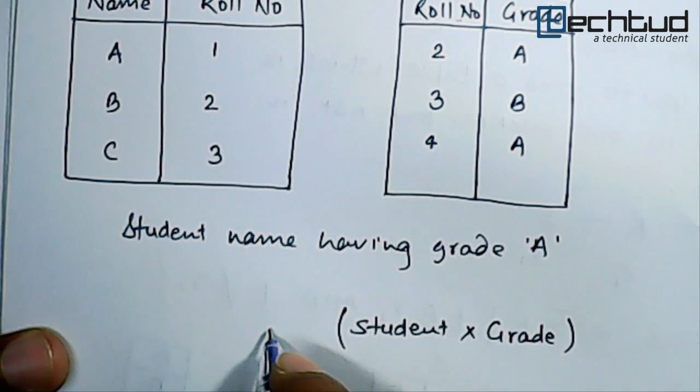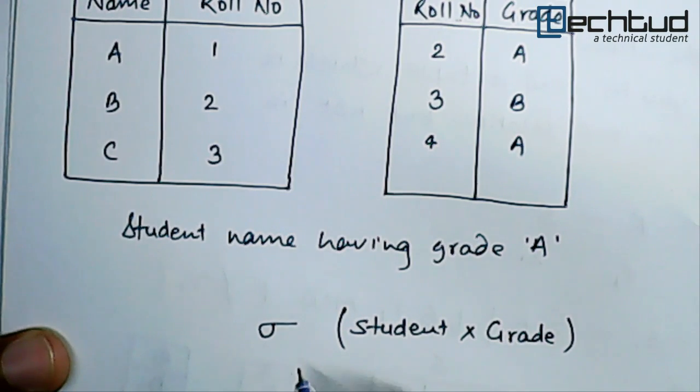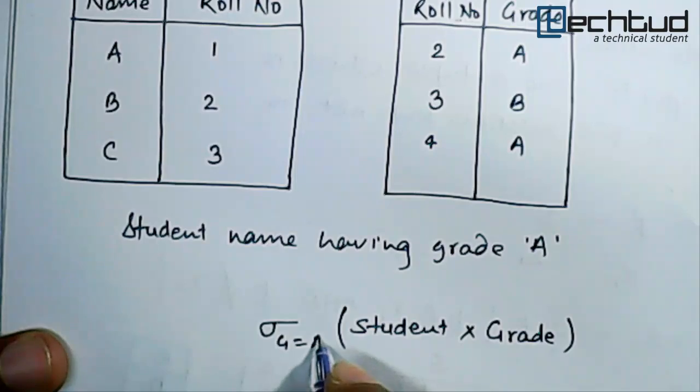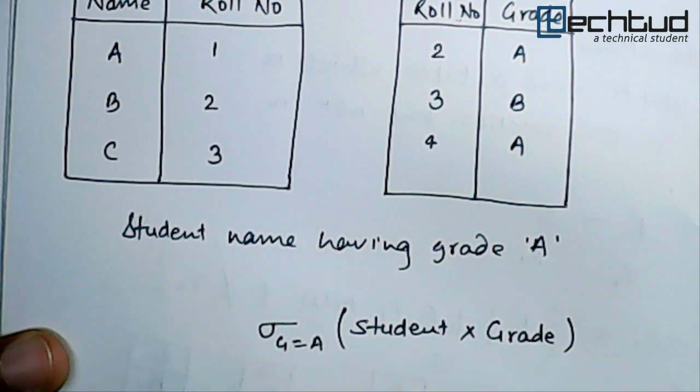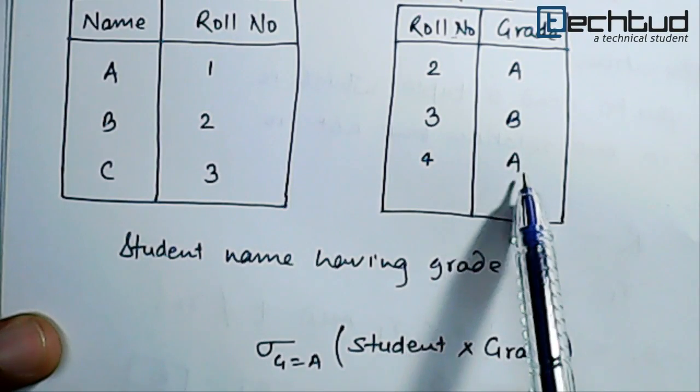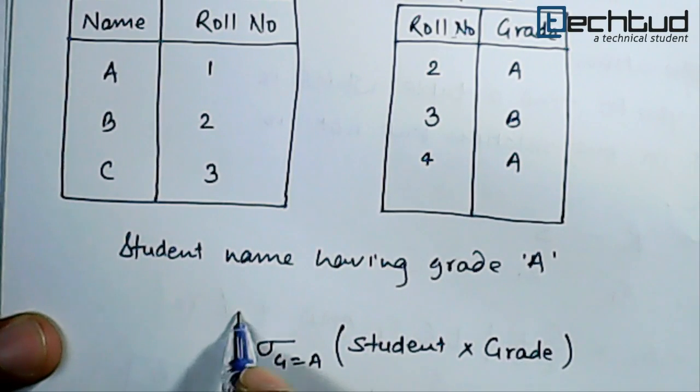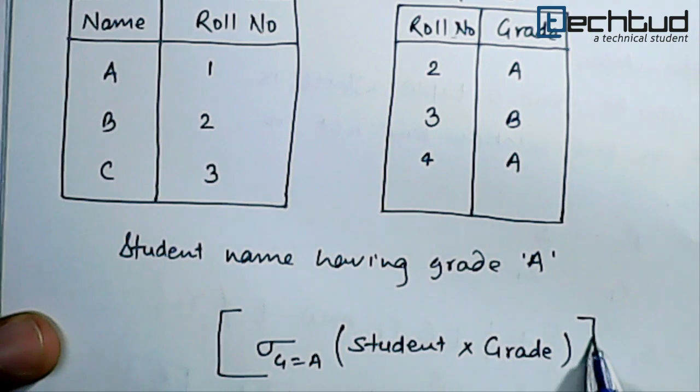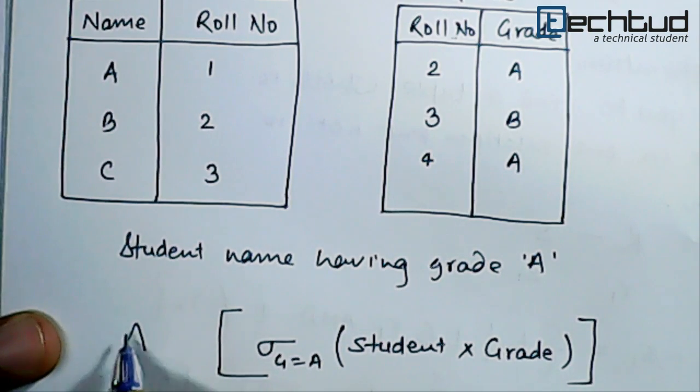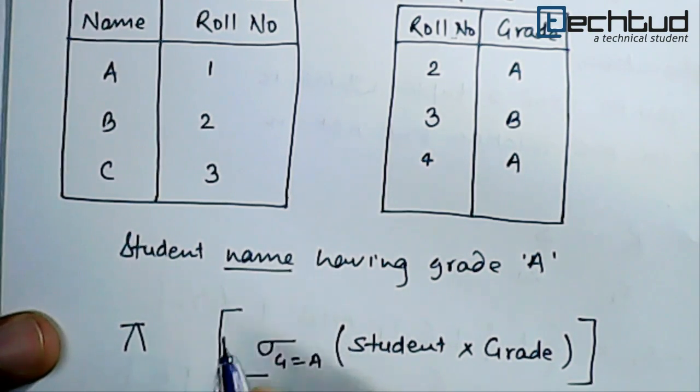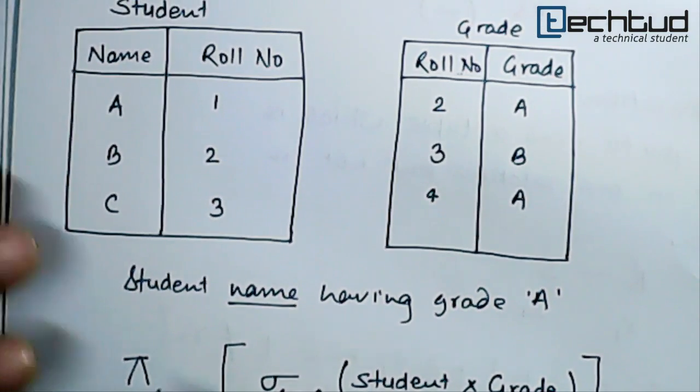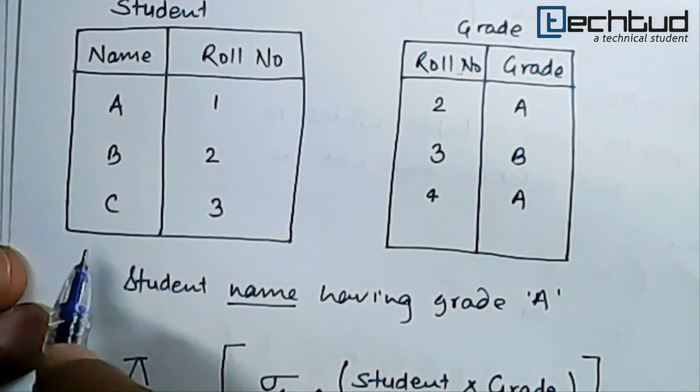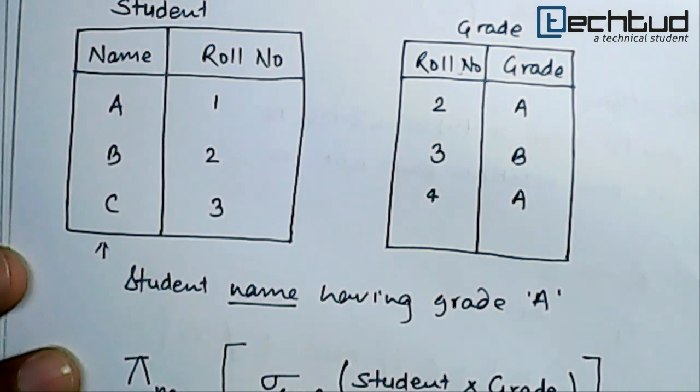Now we will first of all find out student cross grade, and then we will select a row whose grade is equal to A. So grade equal to A. Now the rows will be filtered out and we will be left with the rows of the student whose grade is A. And then what we will do, we will apply project operation. So project what is asked, name is asked, so we will just project the row having this name only.